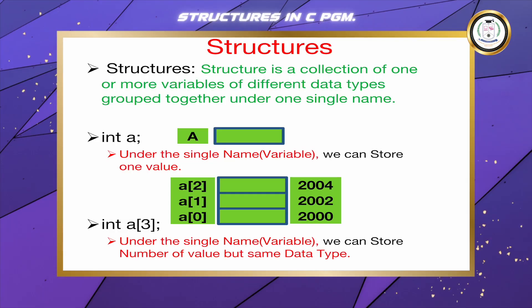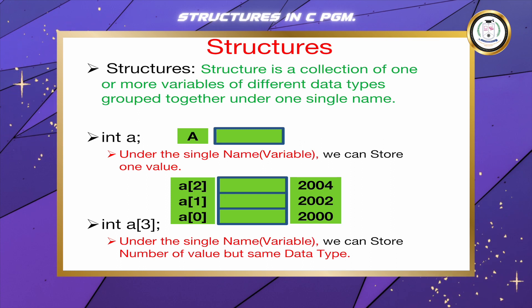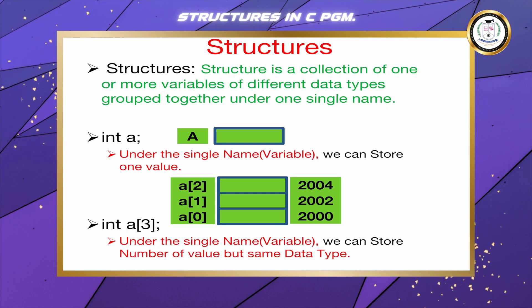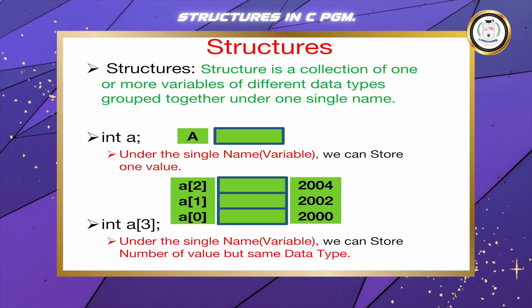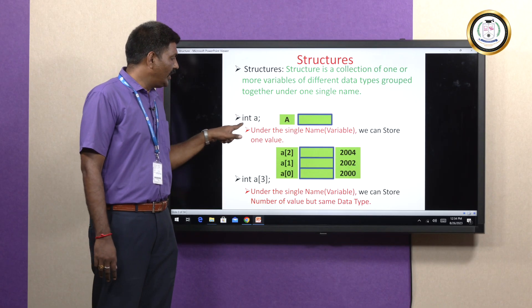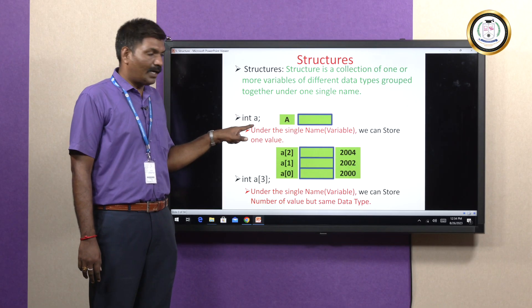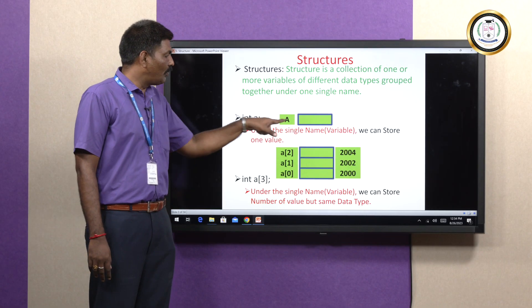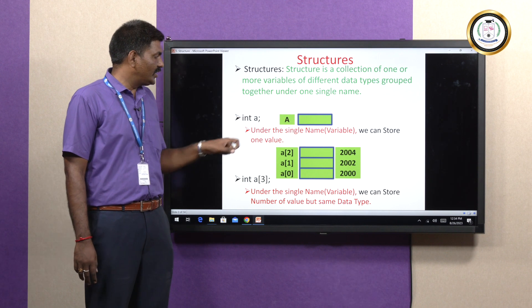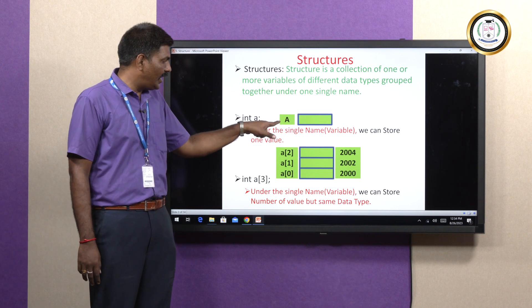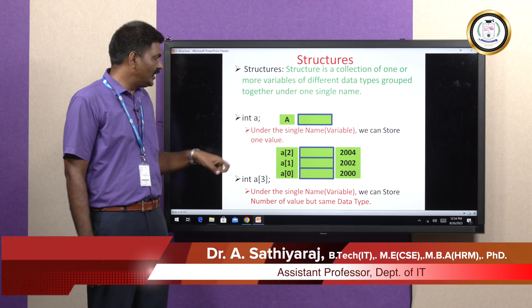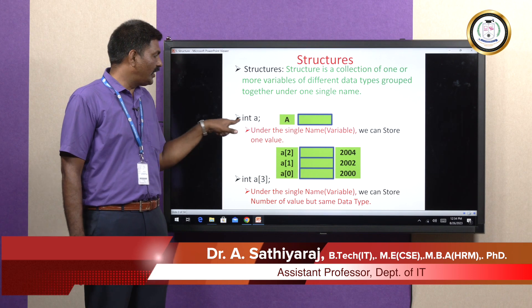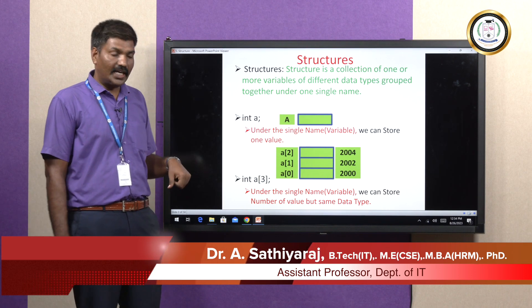I provided an example for the variable. A variable is a single name — you can store a single value in a memory location. For example, integer a. The corresponding memory allocation for a is two bytes, based on the integer data type.